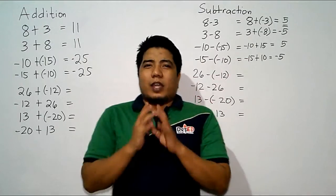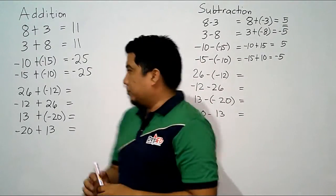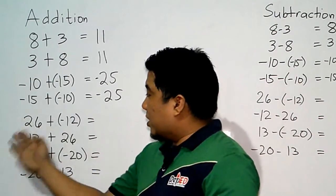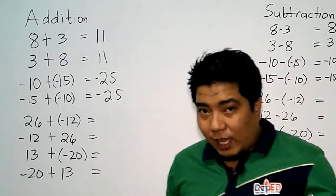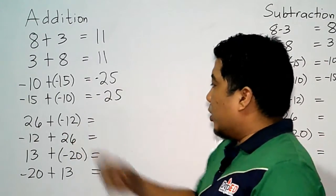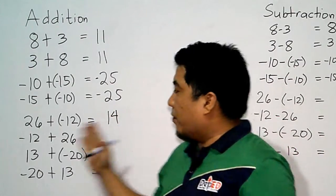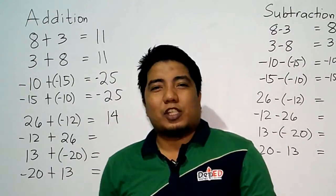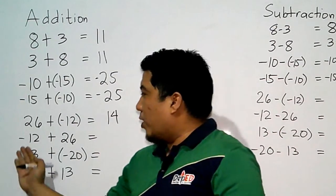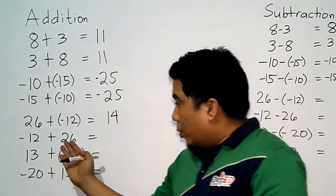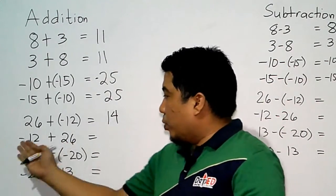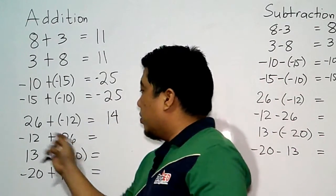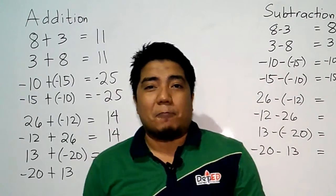Let us go to addition with different signs. We have positive 26 plus negative 12. Since they have different signs, we subtract the values — 26 and 12 — giving us 14. Our bigger value is 26 and it is positive, so the final answer is positive 14. Same goes for negative 12 plus 26: our 26 has the bigger value, and subtracting gives us positive 14 as well.